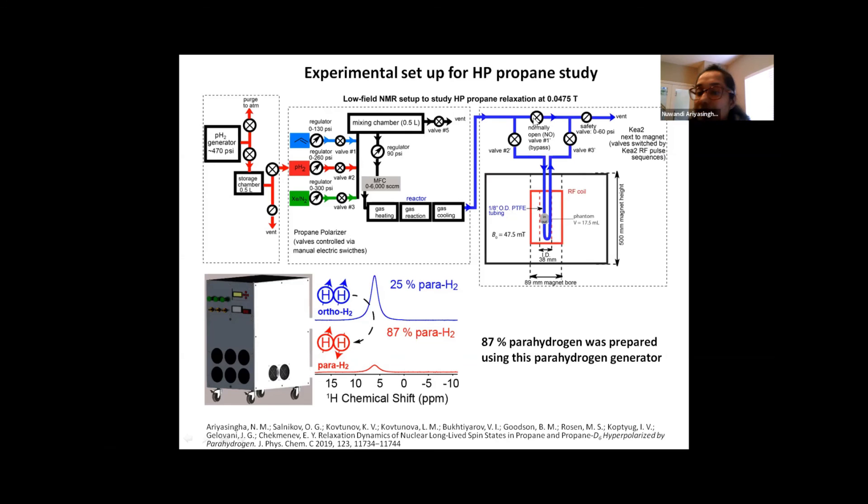The gas is sent using a different valve into a gas phantom which sits inside of an RF coil inside the magnet. And the gas flow is then directed to another valve into the atmosphere. And there is a bypass valve connecting the input and the output of the gas line into the phantom. The purpose of having this bypass valve is to ensure a continuous gas flow when the phantom is closed for the gas flow by closing valve numbers two and valve numbers three.